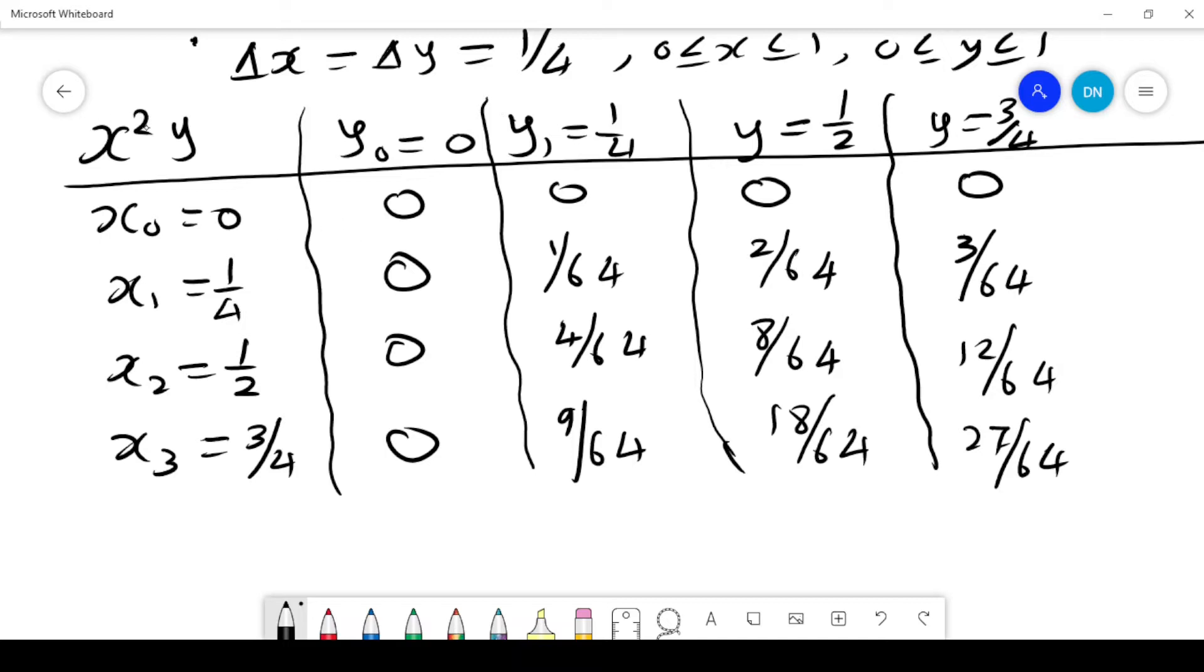Now, we multiply x squared times y. So when x is 0, all these values will be 0. When y is 0, all the values will be 0.